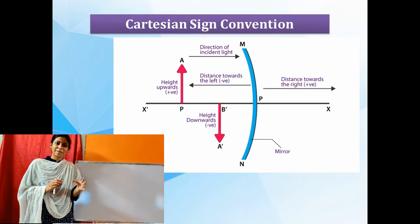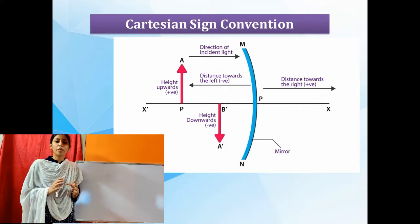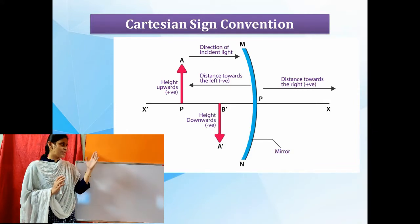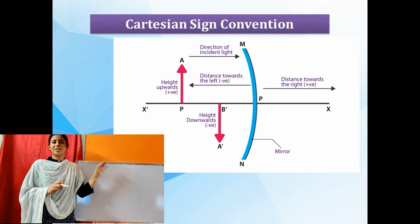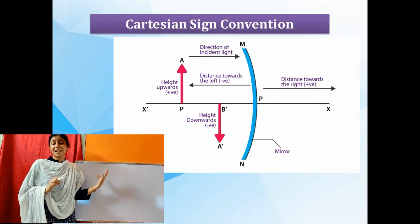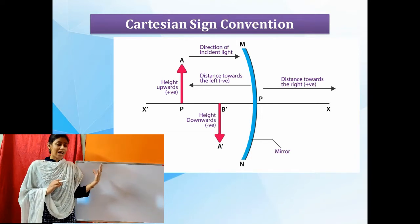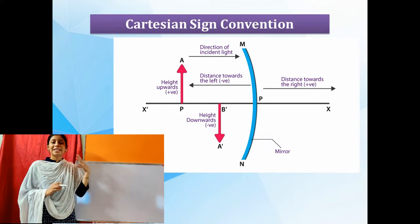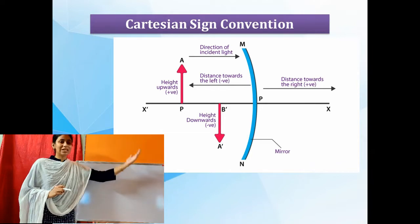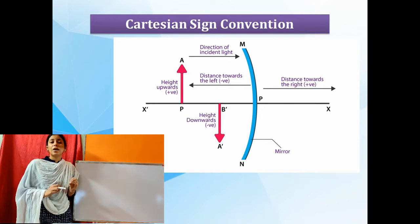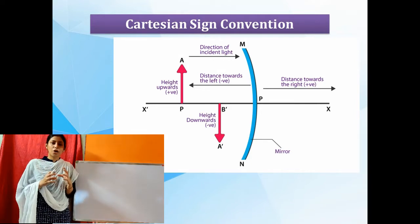The first and very important point of Cartesian sign convention is: all distances must be measured from the pole. As you can see in the ray diagram, point P is the center of the spherical reflecting surface, called the pole. Whether you are measuring the distance of the object or the image, you must take it from the pole — from pole to the object, from pole to the image.